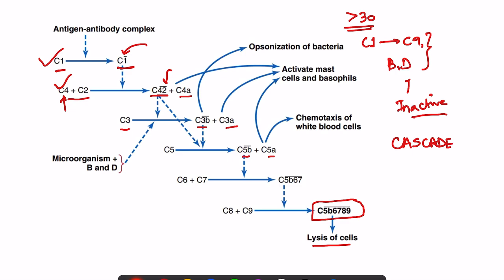With cascade reactions there are certain advantages: first, it is a rapid response. Second, it causes amplification — meaning the end product of one reaction subsequently activates larger quantities of the next. So C1 activates more C4 and C2, and C4̄2̄ activates more C3, resulting in a much larger end product.